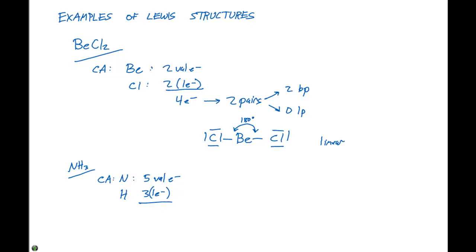This gives us a total of eight electrons. If we have eight electrons, there are four pairs of electrons. That nitrogen can form three bonds to each of the hydrogens, or one bond to each hydrogen, there's three of them. So that gives us three bonding pairs, and we have one lone pair.